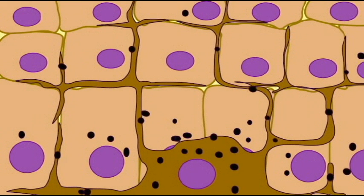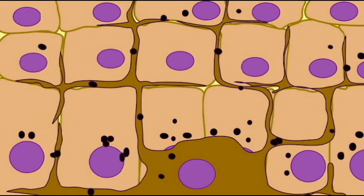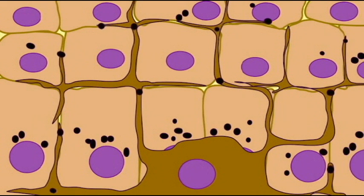They can then synthesize the pigment melanin, which is the primary pigment in humans, and inject this pigment into the surrounding cells.